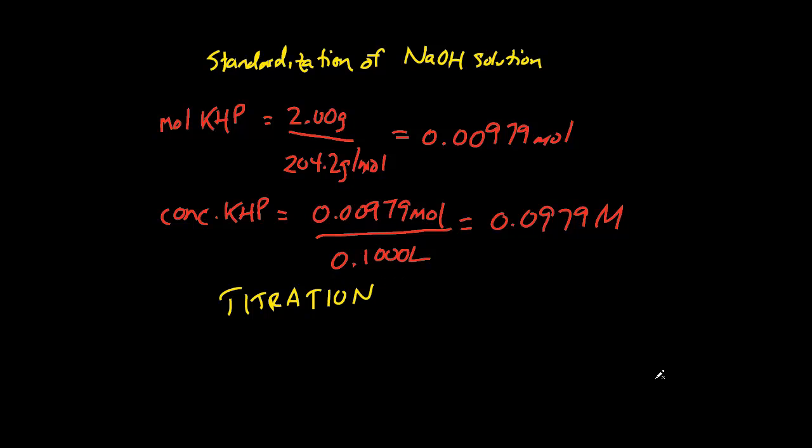From that, we took 25 mL. If we have 0.0979 molar acid times 0.025 liters...